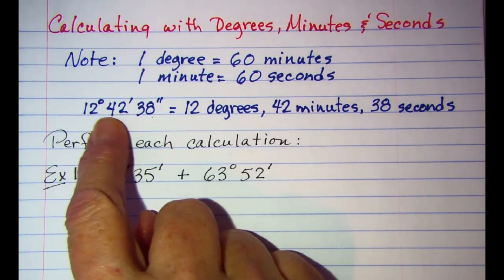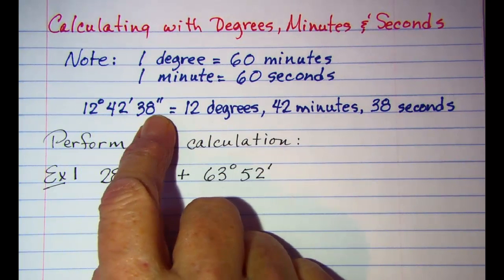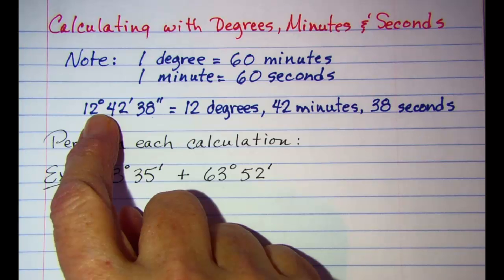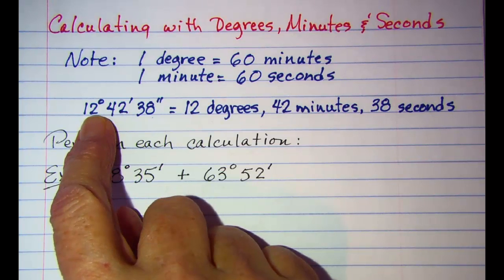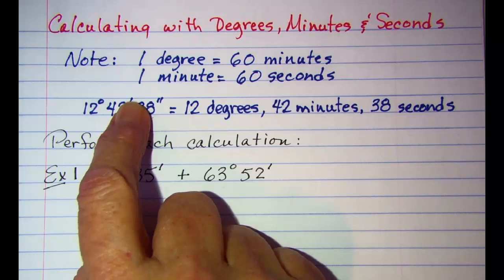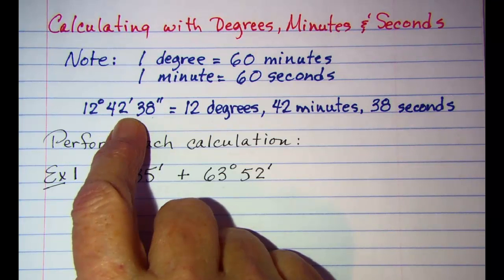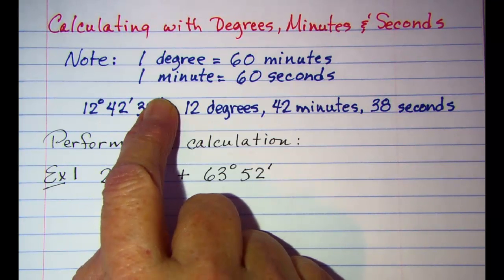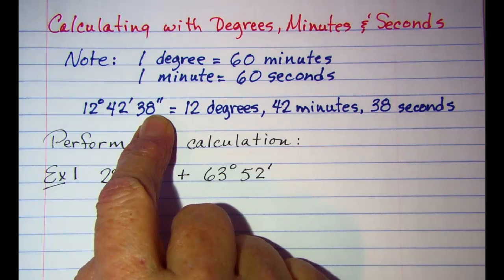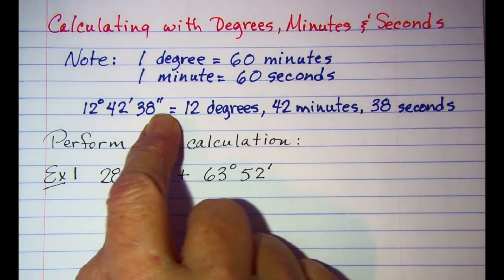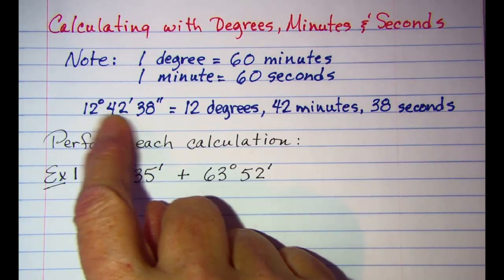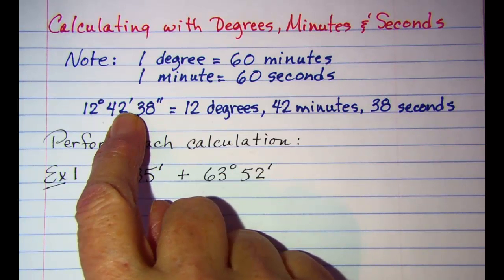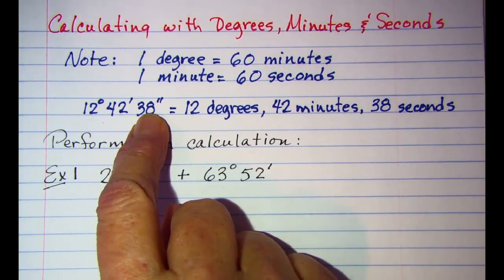The notation we'll be using is: the superscript O represents degrees, one apostrophe represents minutes, and two apostrophes represent seconds. So, for example, 12 degrees 42 minutes 38 seconds.